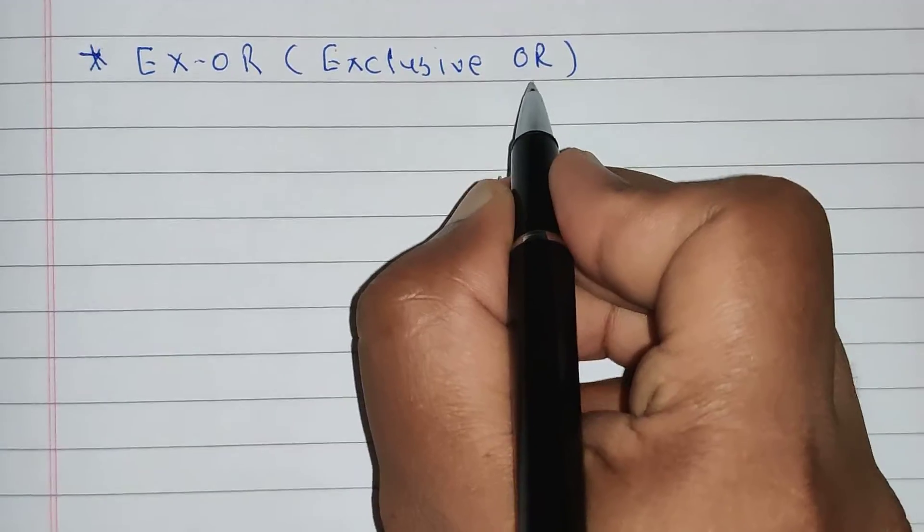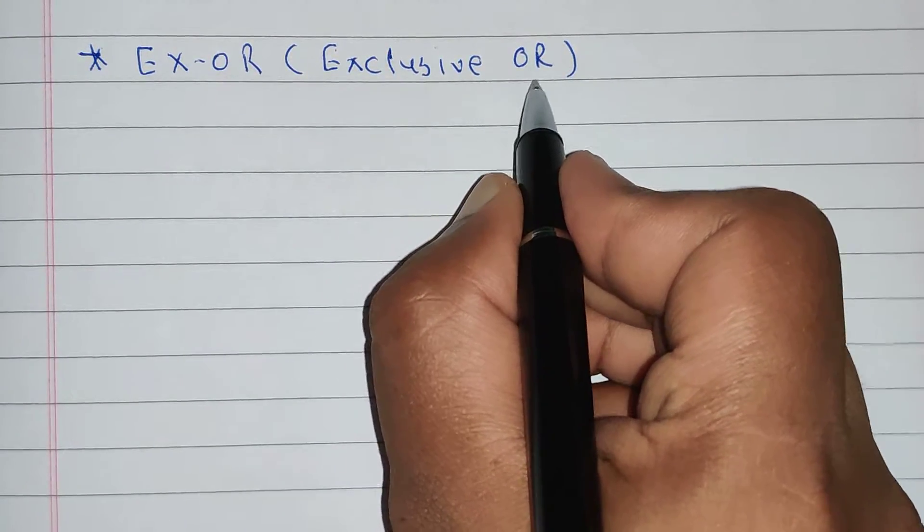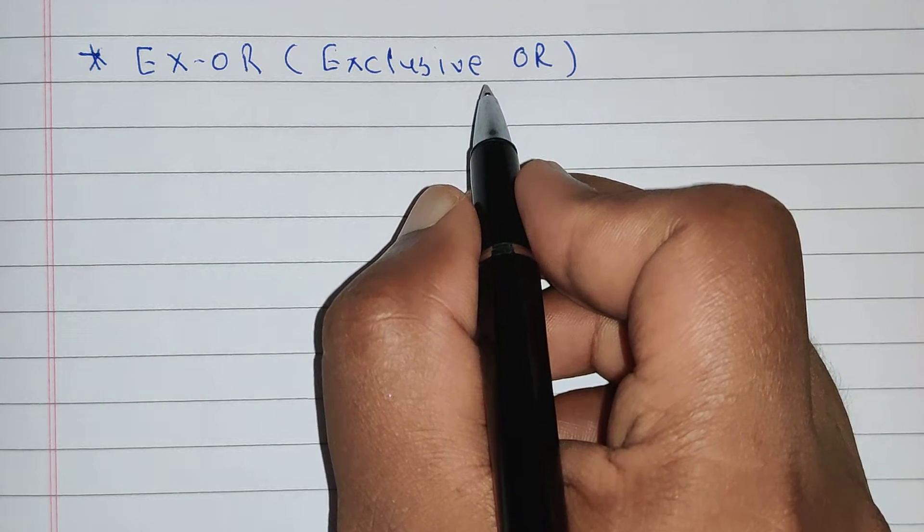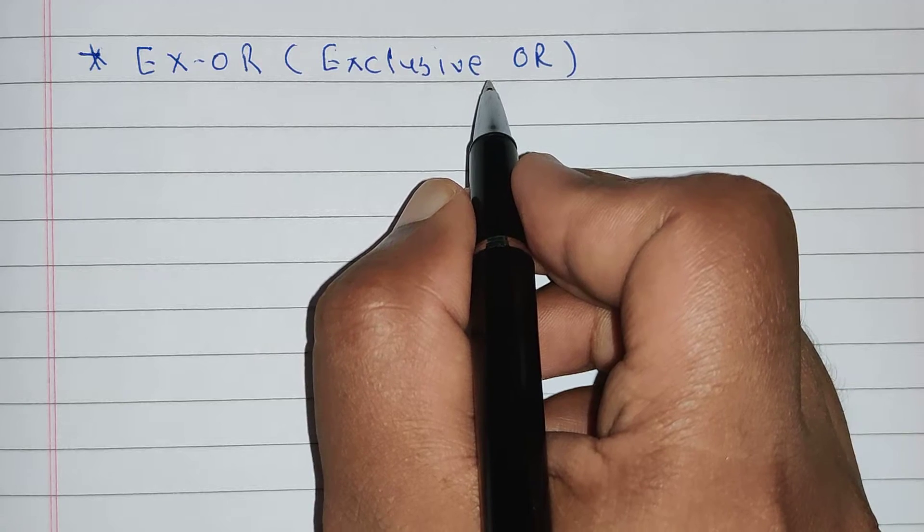Now, what will be the operation performed by exclusive OR gate? It will add the exclusive inputs. When inputs are exclusive, at that time only, we are going to get output.